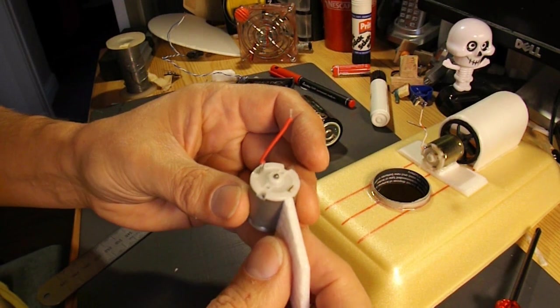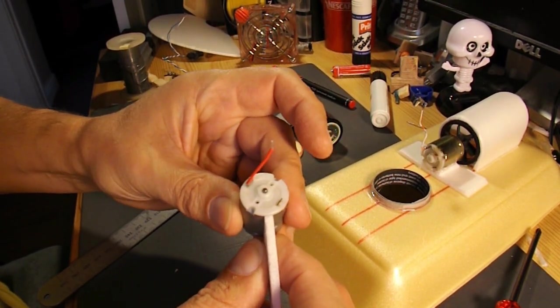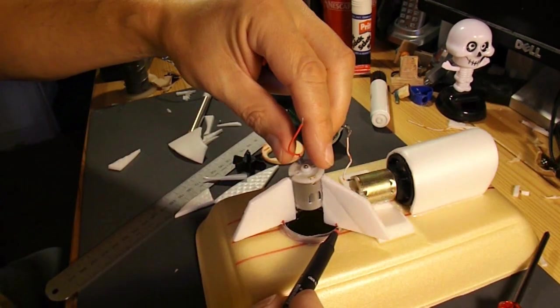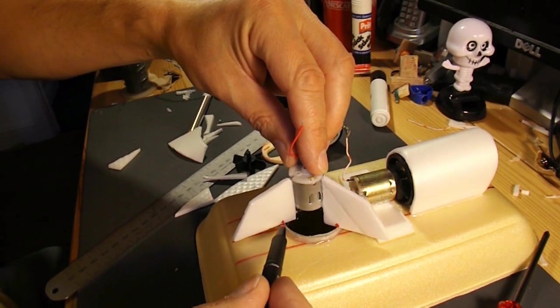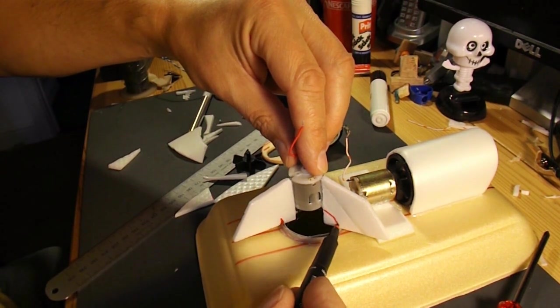Now I should put some mounting brackets on the motor. I'll put three on. One, two, three. Just mark up where I want it to sit so I can trim it. So I should trim that like that.